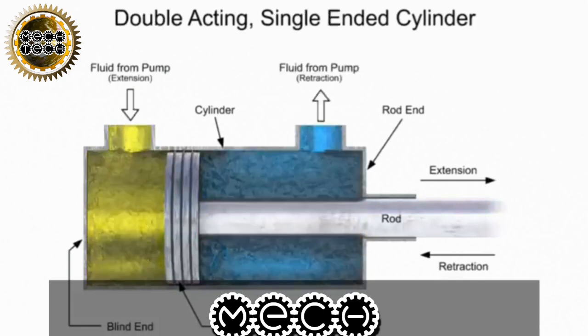A double-acting cylinder is a cylinder in which fluid acts on both sides of the piston. This type of cylinder can produce linear motion in two directions. A double-acting cylinder has two fluid ports, one on the blind end and one on the rod end.